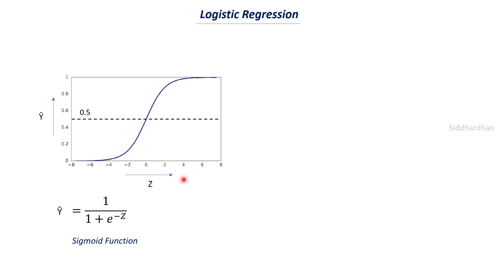This is how the formula of a sigmoid function looks — the equation of a sigmoid curve. Y-hat is equal to 1 divided by (1 plus e to the power of minus z). So the y-hat value depends on the value of z, and this is the relation of the sigmoid function. Now we need to understand what z is.